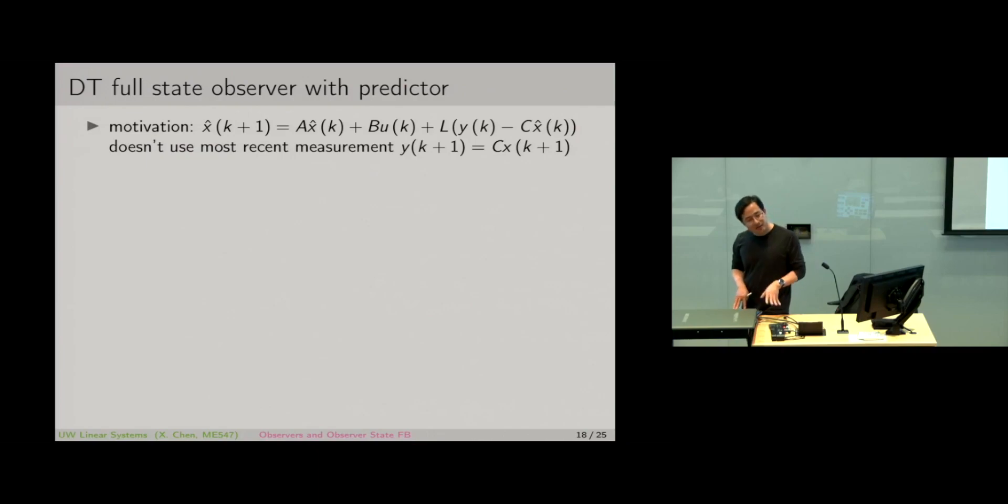Now let's dive a little bit deeper into this and think about what we can do more. Here we know this is the state estimation equation, the same as the Luenberger observer. However, if we think about the indices, this index K+1 means we are calculating this state estimate at time K+1. Now, at time K+1, you can see this is using a previous measured output.